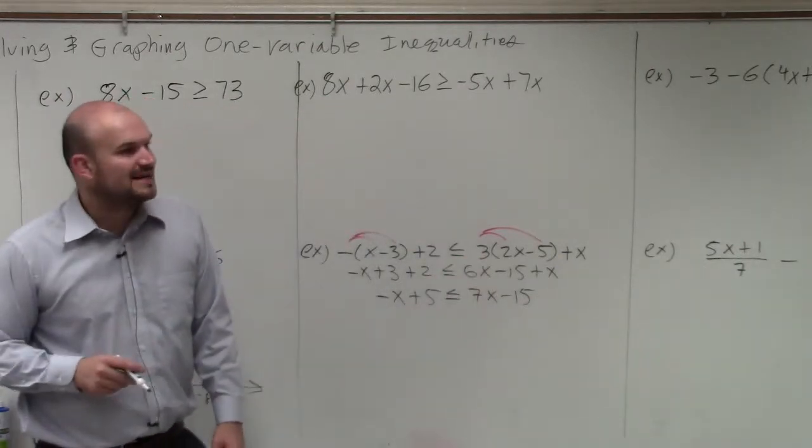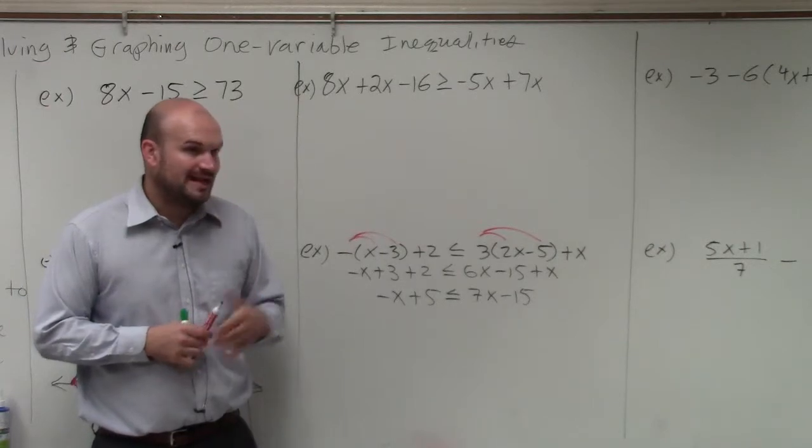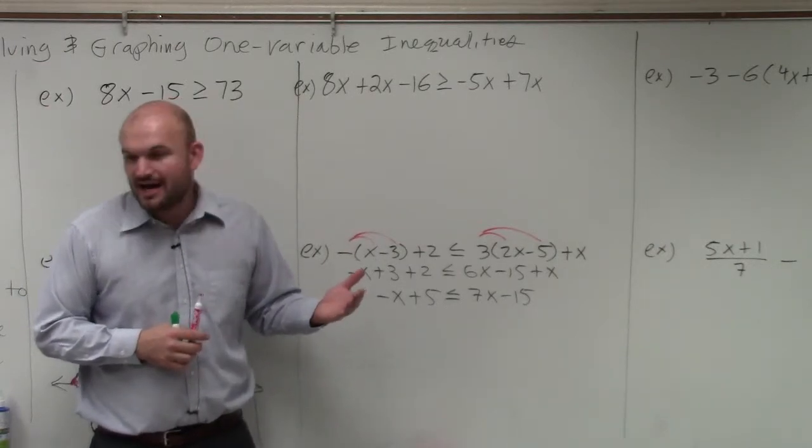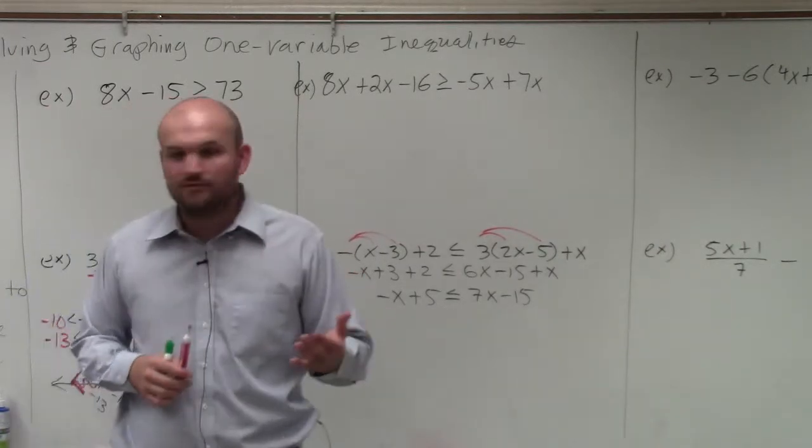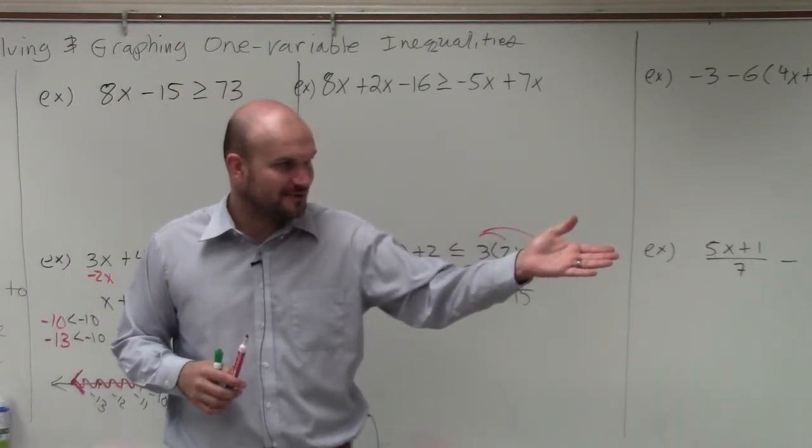Now, following my ideas of getting the variable and making it positive, which side of the inequality should I solve for my variable? Green lanyard over there, right side or left side? What do you think?